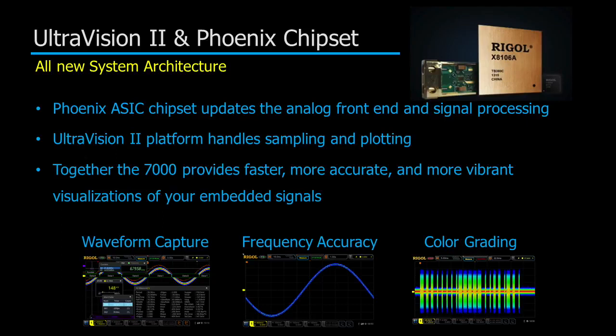The ASIC chipset improves the waveform capture performance, the frequency accuracy, while the UltraVision platform adds color grading and other capabilities to the sampling and plotting. Together the 7000 provides faster, more accurate and more vibrant visualizations of your embedded signals.